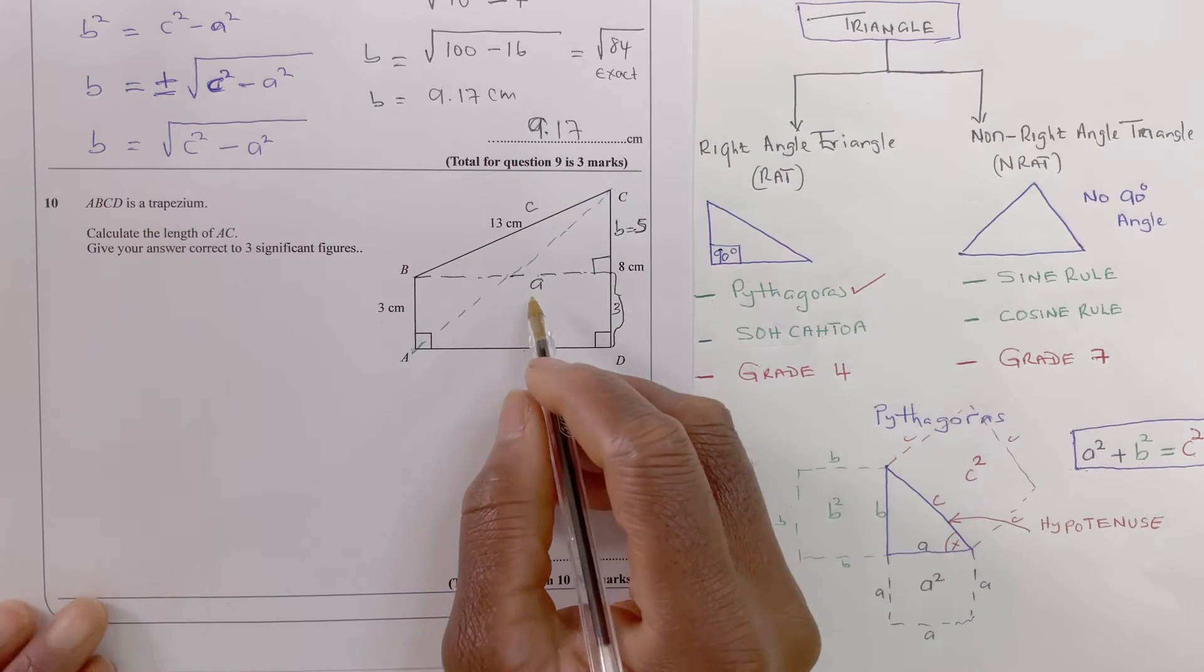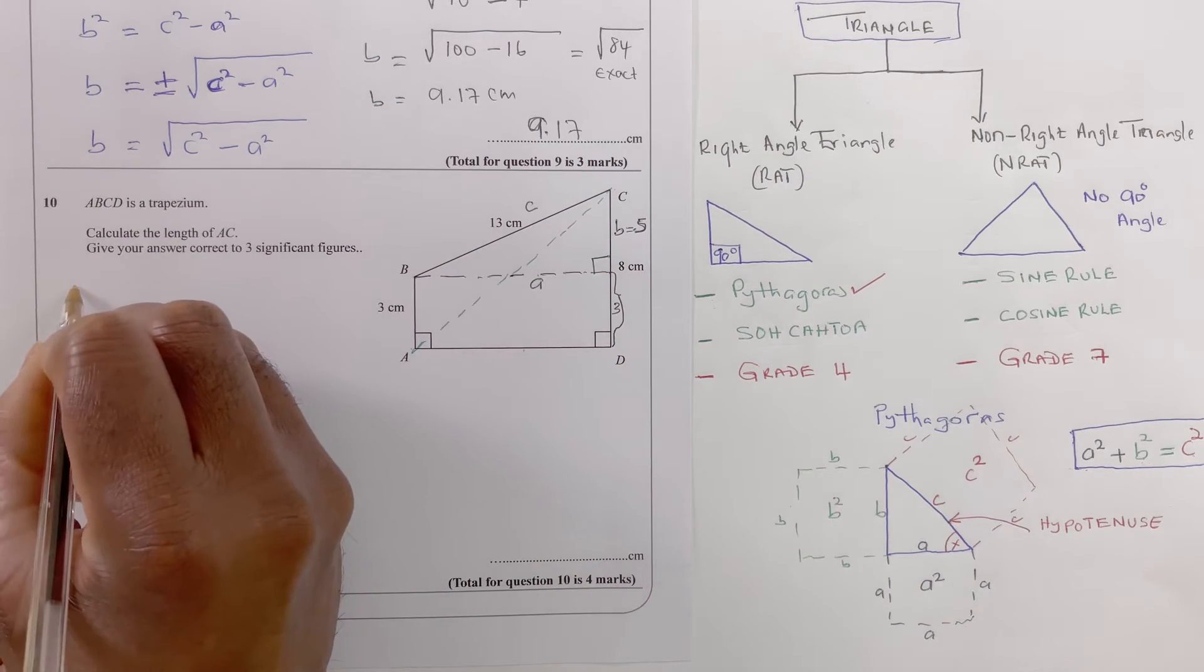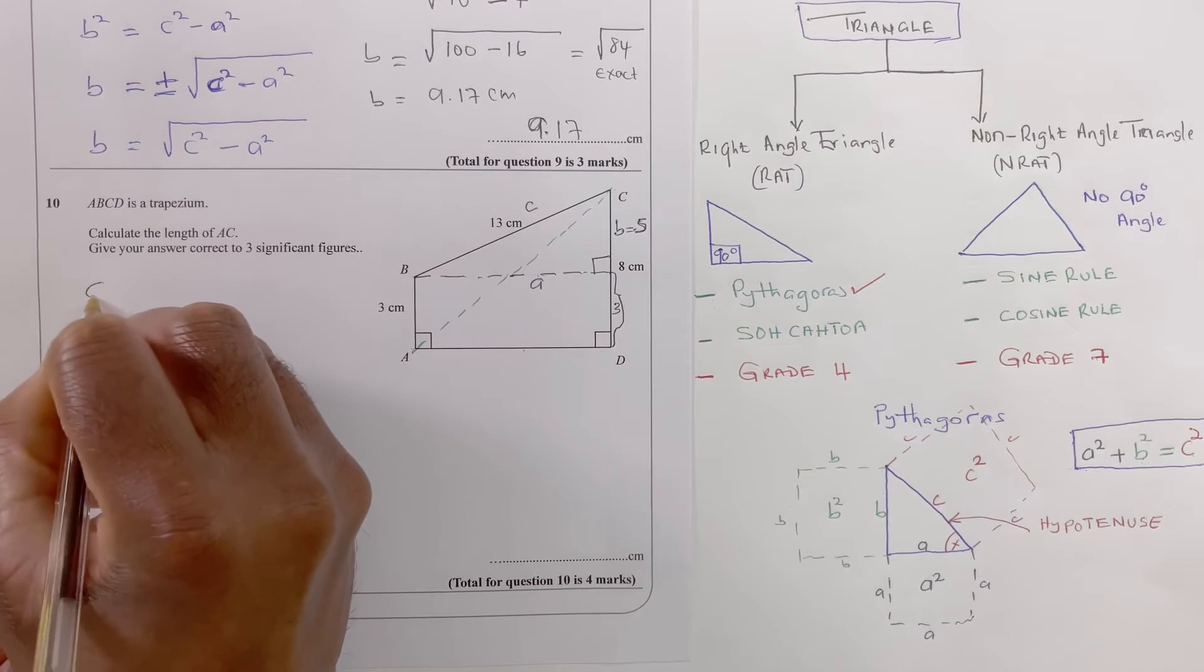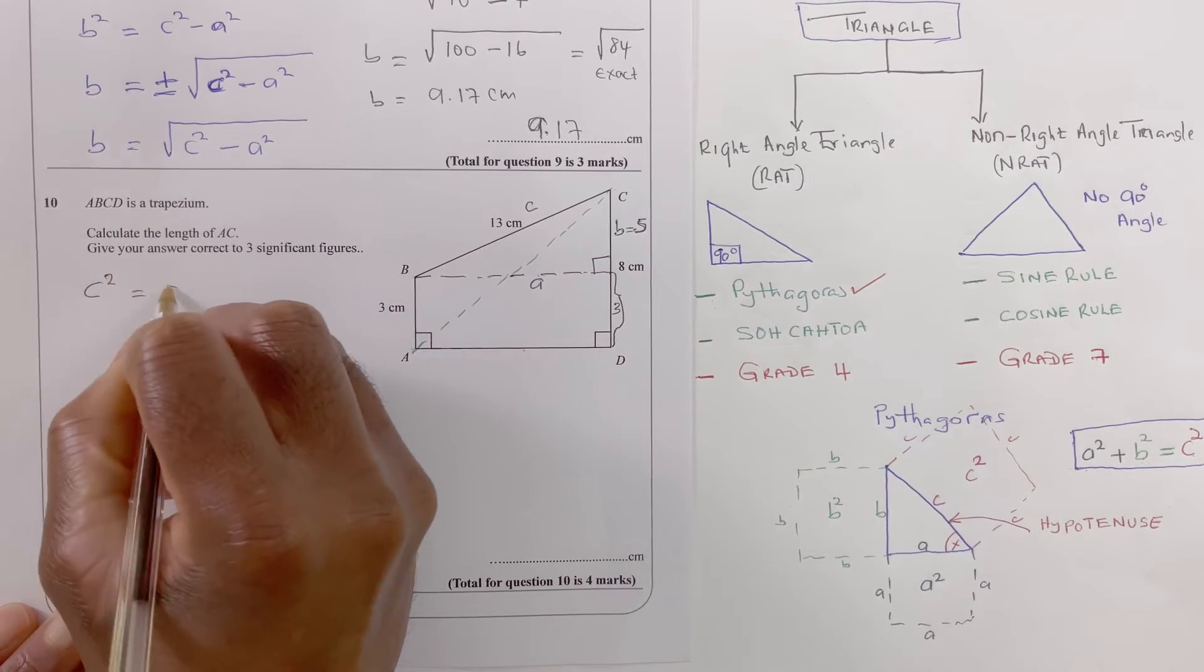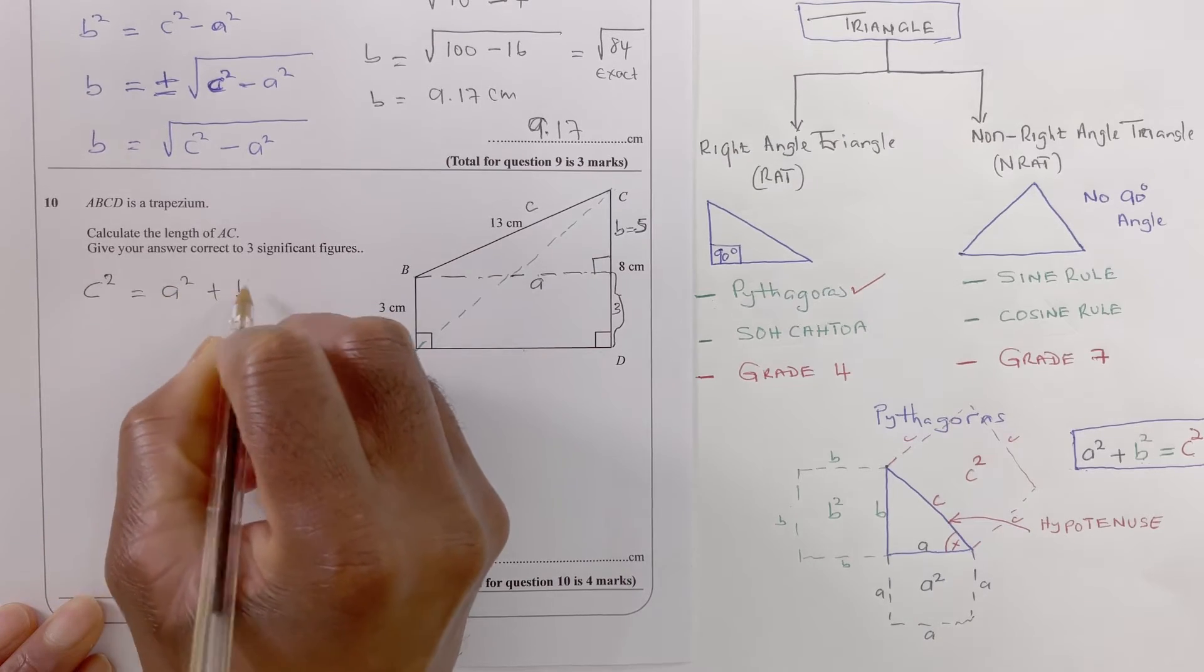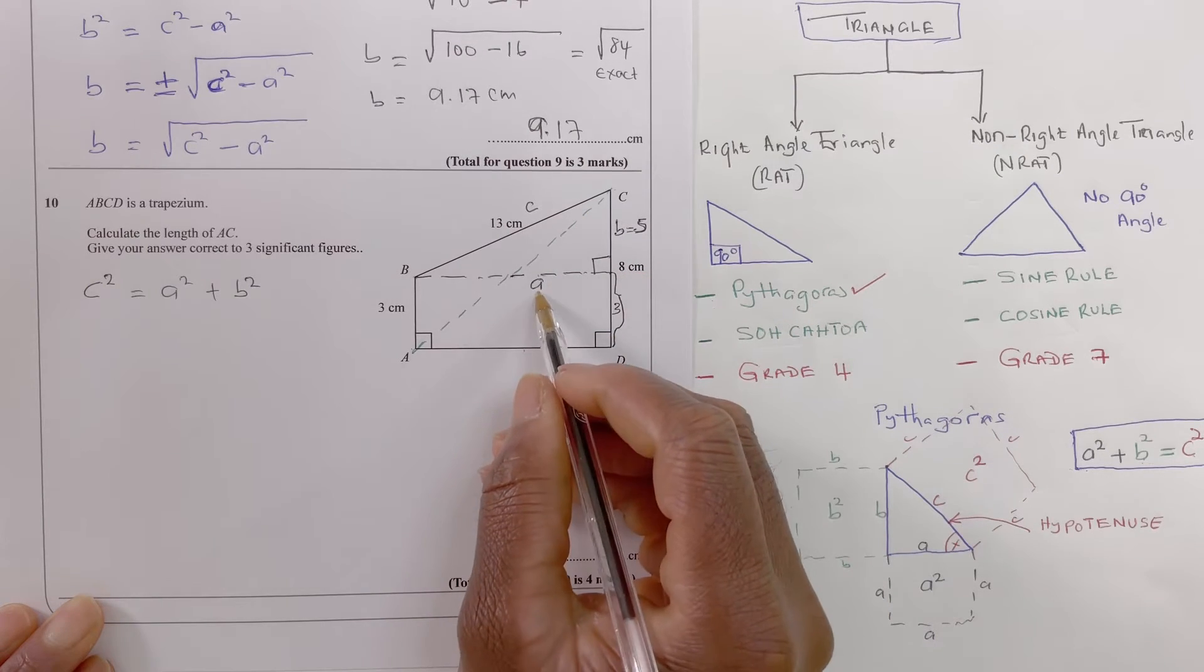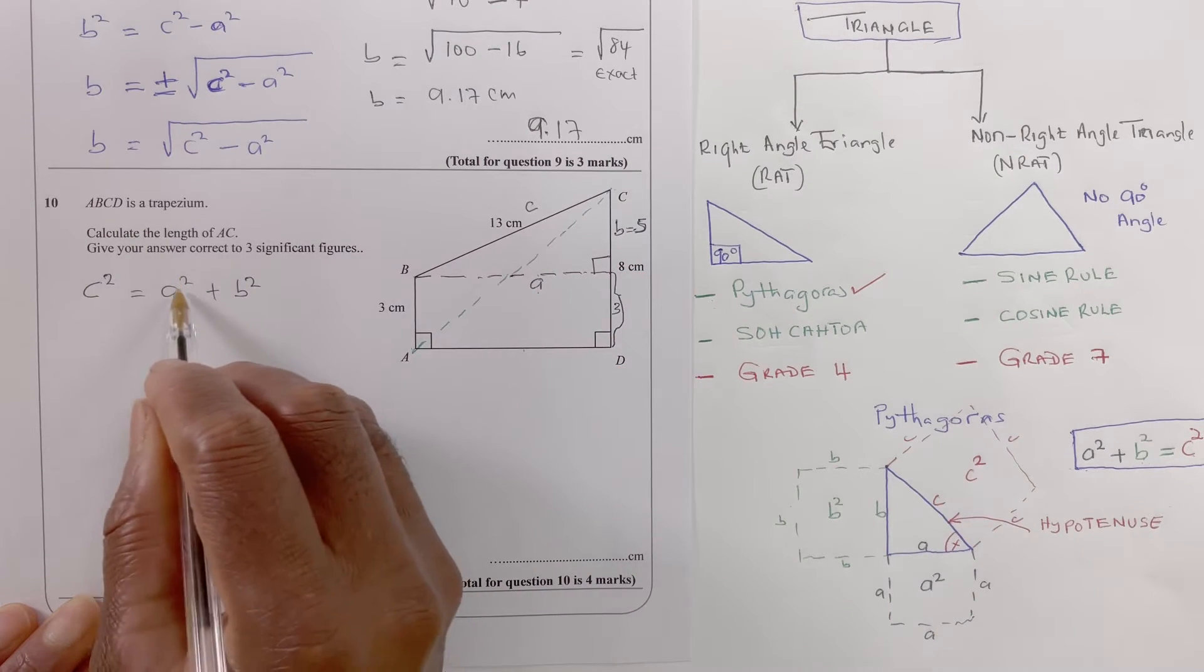So I can find a applying my Pythagoras theorem here. c squared equals a squared plus b squared.